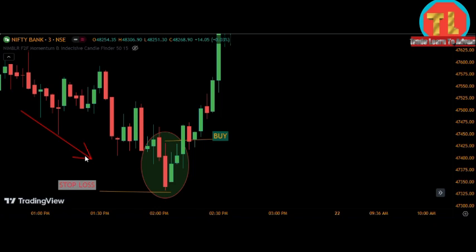Entry is made above the high of the first candle. The stop loss is placed below the low of the first candle. After that, you can see a bullish uptrend comes in the market. I hope you liked this video. Please like, comment, and share.